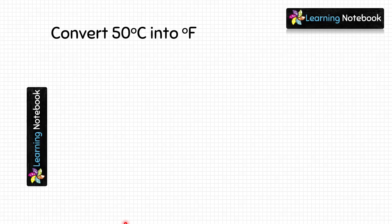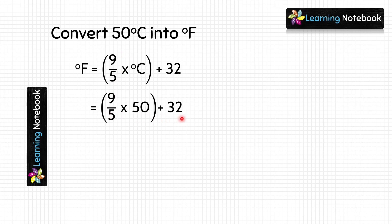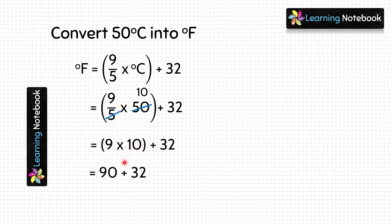Next question: convert 50 degree Celsius into Fahrenheit. Using the formula: 9/5 × 50 + 32. First we solve 9/5 × 50, which simplifies to 9 × 10 equals 90. Then we add 32 to 90 and we get 122. So the answer is 122 degree Fahrenheit.